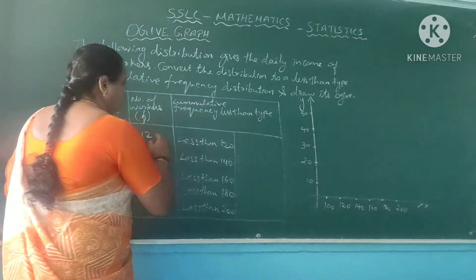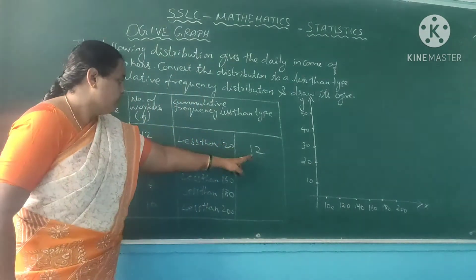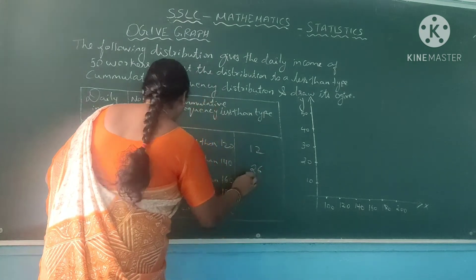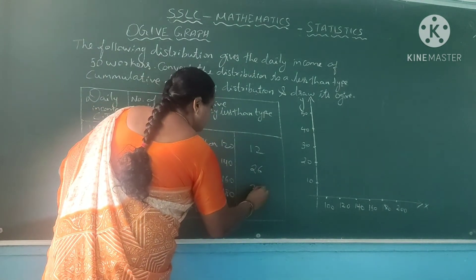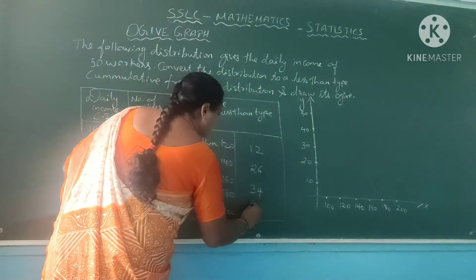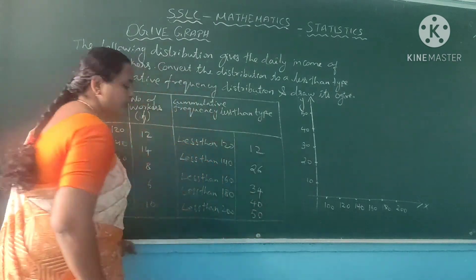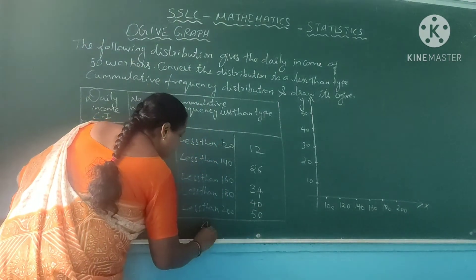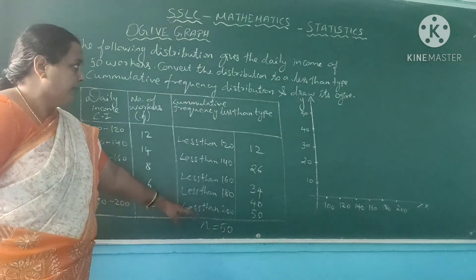Now, the first cumulative frequency value is 12. Next, 12 plus 14 is nothing but 26. Then 26 plus 8 gives 34. Then 34 plus 6 gives 40. And 40 plus 10 is nothing but 50. So the total number of walkers — n value — is equal to 50.